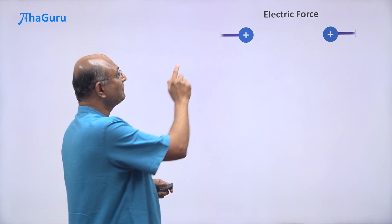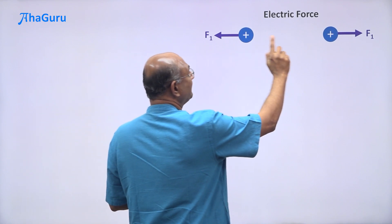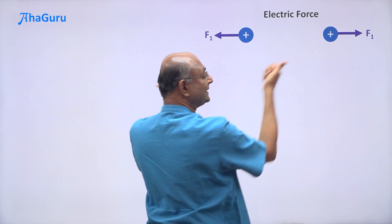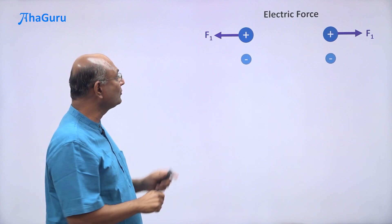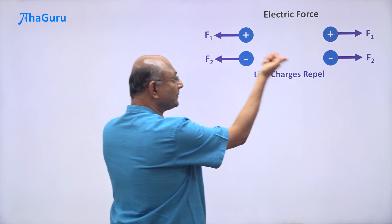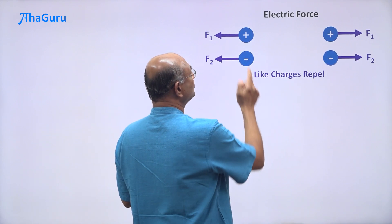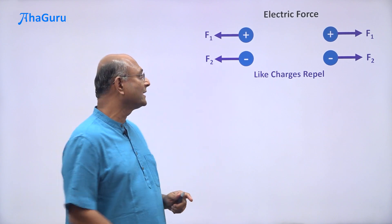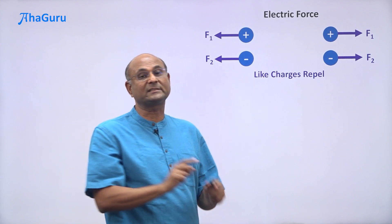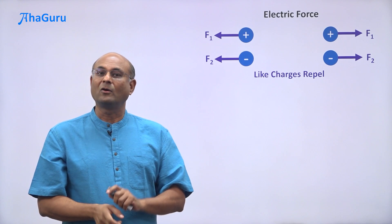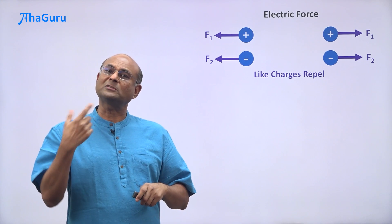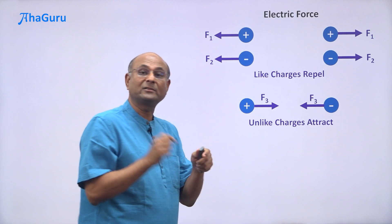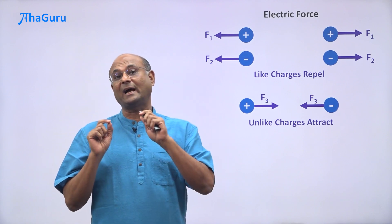If I have plus and plus charge — two positive charges — they are going to repel each other. And if I have two negative charges, they are also going to repel each other. So positive and positive repels, negative and negative repels. We say that like charges repel each other. What if I have a positive and negative charge? Well, then they are going to attract, and so we say unlike charges attract.